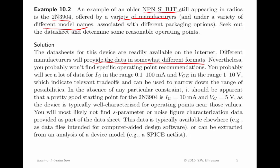The data sheets for this device are readily available, but the manufacturers will provide the data in somewhat different format and you probably won't find specific operating point recommendations. What you'll find instead is a whole lot of data for collector currents in the range 0.1 to 100 milliamps and collector emitter voltage in the range of 1 to 10 volts. This data will indicate the relevant trade-offs that can be used to narrow down the range of possibilities. In the absence of any particular constraint, it should be apparent that a pretty good starting point for this particular transistor is 10 milliamps and 5 volts.